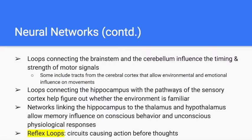Loops connecting the brain stem and the cerebellum influence the timing and strength of motor signals. Some of these include tracts from the cerebral cortex that allow environmental and social influence on movements. Loops connecting the hippocampus with the pathways of the sensory cortex help figure out whether the environment a person is in is familiar. Networks linking the hippocampus to the thalamus and hypothalamus allow memory to influence conscious behavior and unconscious physiological responses.